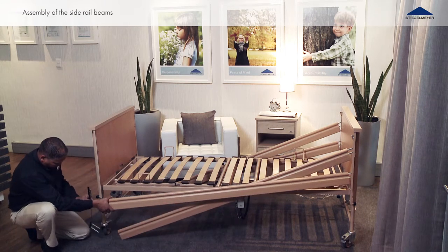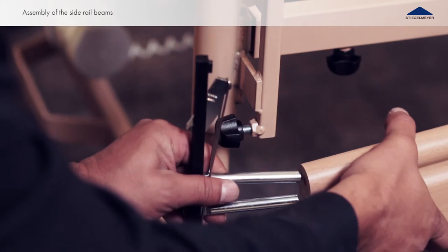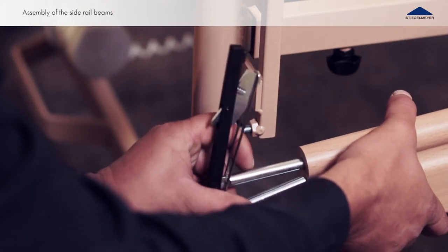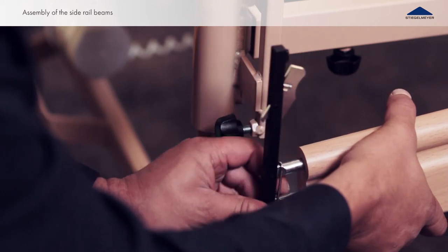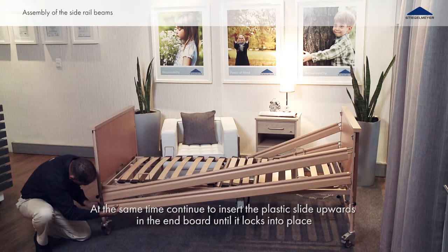As the plastic slide is being inserted, put the top pair metal pins into the upper side rail at the same time. Place the bottom pairs of the metal pins into the lower side rail.